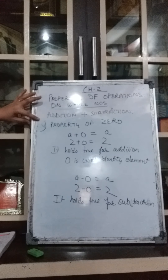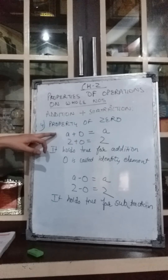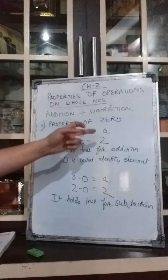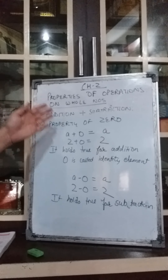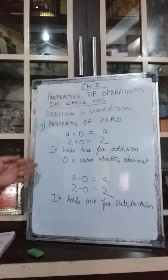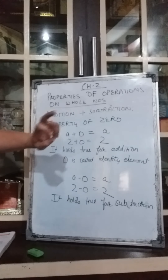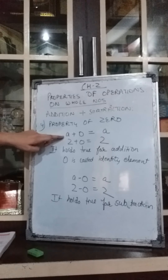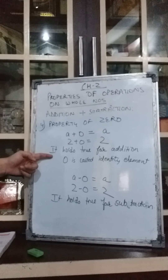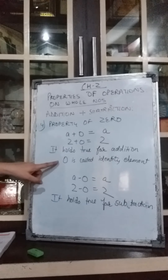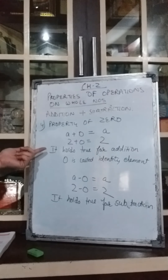Now we come to the fourth property — the property of zero. This means that if 0 is added to any whole number, it gives the whole number itself. Or if 0 is subtracted from any whole number, it gives the whole number itself. For addition: A plus 0 equals A. Taking A as 2, 2 plus 0 gives 2. This property holds true for addition, and that is why 0 is called the identity element — because it gives the same identical whole number.